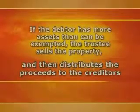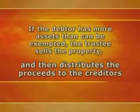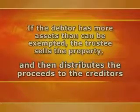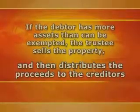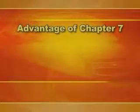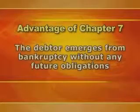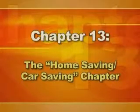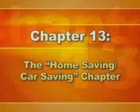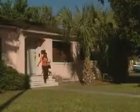If a debtor has more assets than can be exempted, the trustee sells the non-exempt property and distributes the proceeds to the creditors according to priorities established by law. Very often there is not enough money to pay for anything more than the cost of administration, and so the creditors receive nothing. The principal advantage of Chapter 7 is that the debtor emerges from bankruptcy without any future obligations on his or her discharged debts. Some debts cannot be discharged.